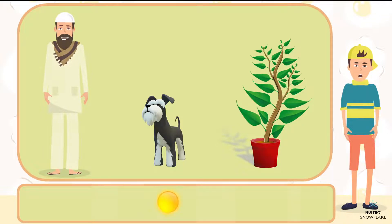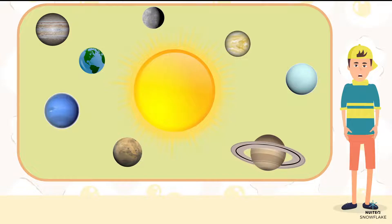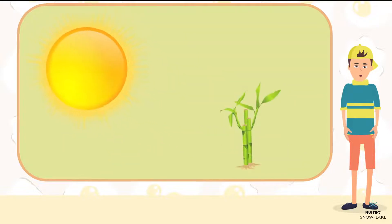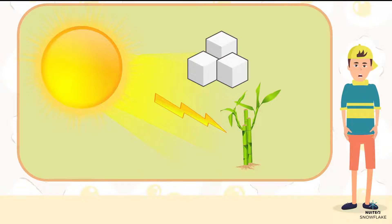We've learned that the sun is the center of our solar system and how our planet gets light, heat, and energy from the sun. The sun is important in the growth of plants. Plants, through a process called photosynthesis, convert light energy from the sun into food energy they need to grow. That energy is a kind of sugar.